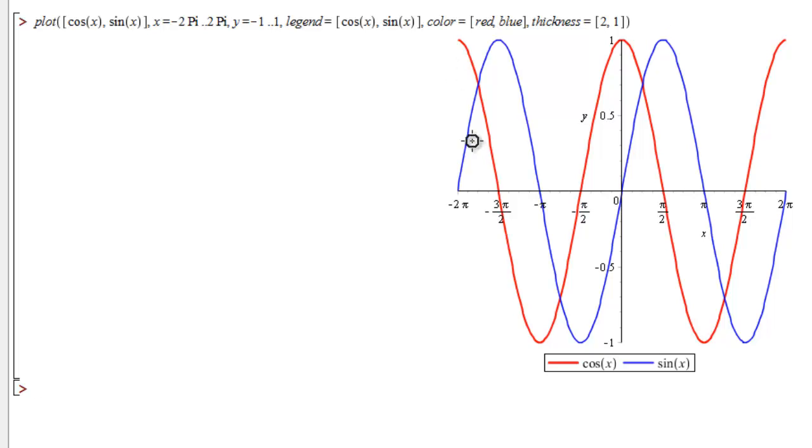And there we are, we have our graph. You see in blue, we have our slightly thinner sine line, and in red, we have our slightly thicker cosine line. And we see that the graphs of sine and cosine are very similar. They just look shifted over a bit.